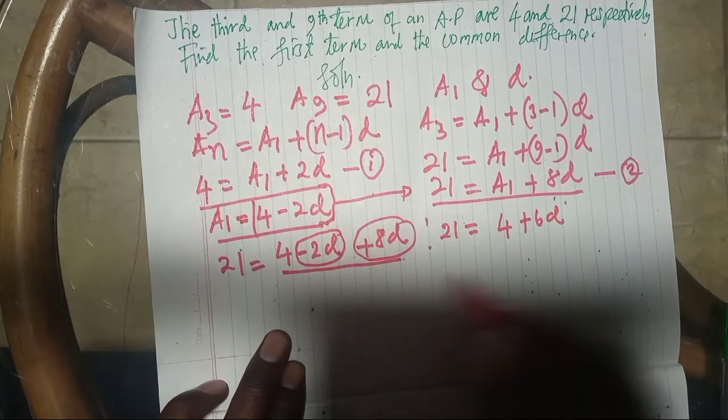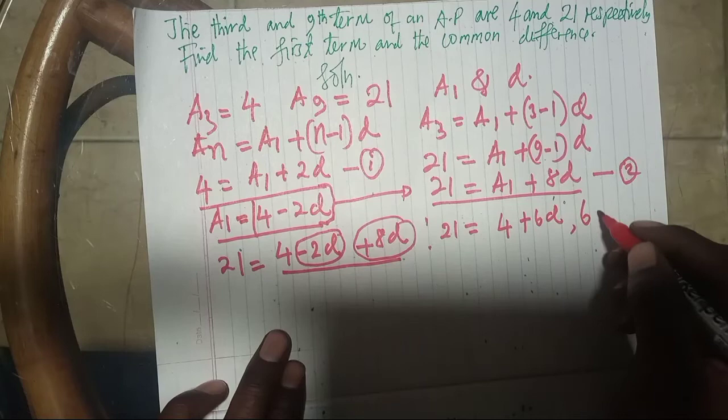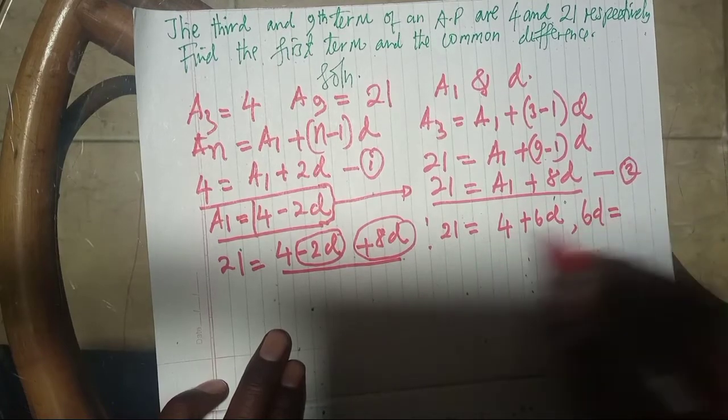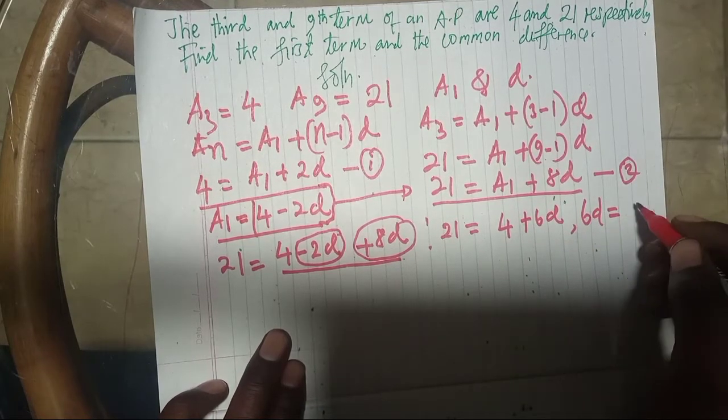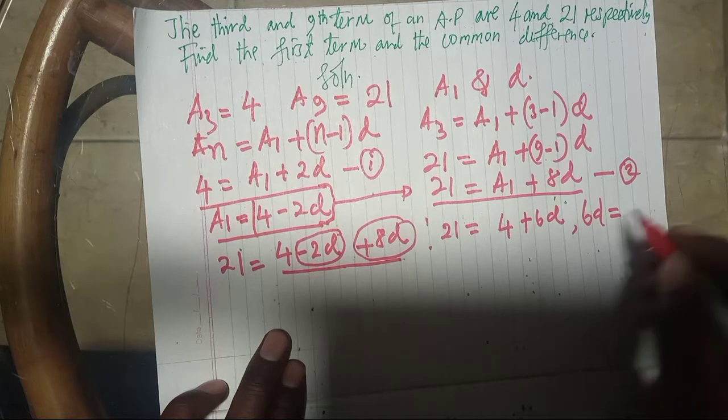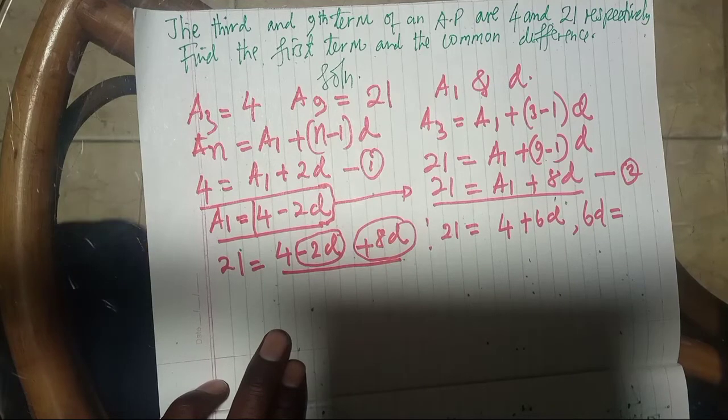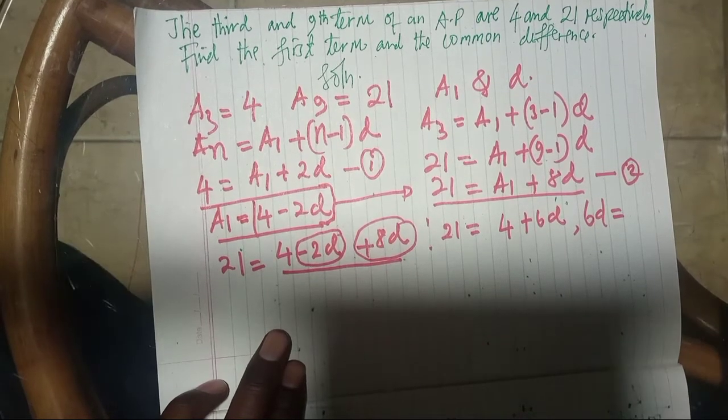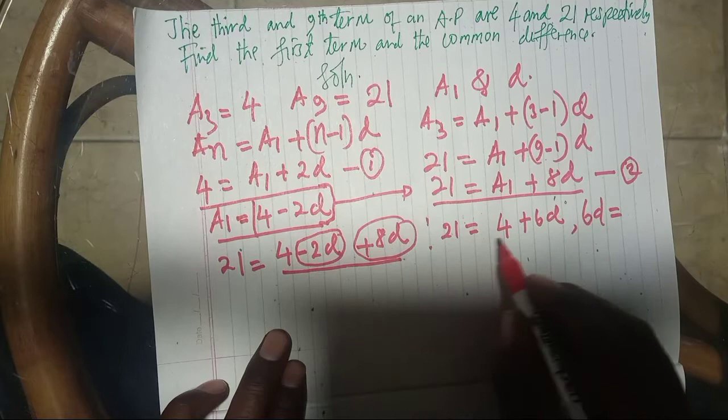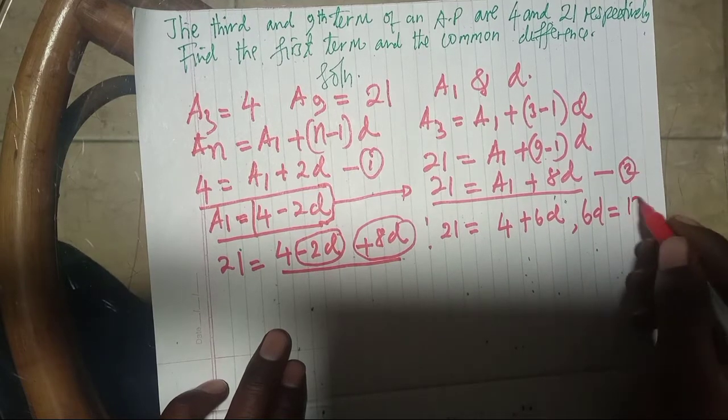Now this is taken to the other side, therefore we have 6D equals 21 minus 4, which equals 17. Therefore, 21 minus that one, we get 17.